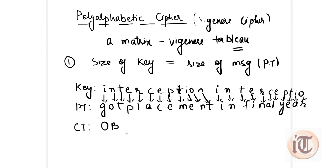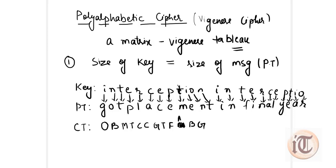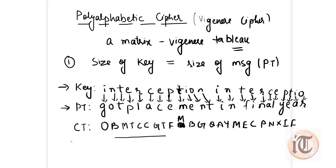Continuing in the same manner, the complete cipher text constructed from the key INTERCEPTION and the plain text 'got placement in final year' using the Vigenère tableau is: O, B, M, T, C, C, G, T, F, M, B, G, M, B, G, Q, A, Y, M, E, C, P, N, X, I, F. This is the cipher text for the given plain text using polyalphabetic cipher.